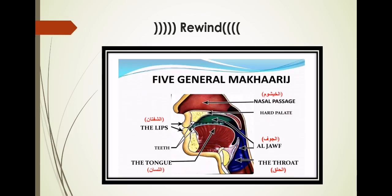We will go through the general Makharij. General Makharij is the articulation point of a letter as a whole — we mention the whole organ together. From the same organ there can be more than one letter: six, ten, eighteen, four, and so on. We will then discuss from where within that organ these different letters are coming — those are the specific articulation points.